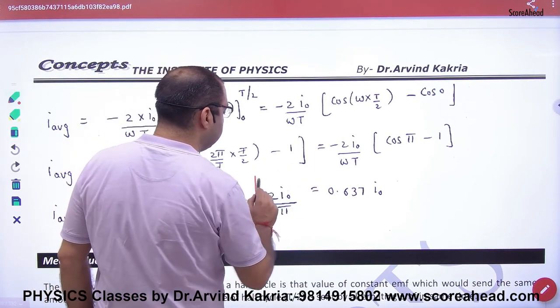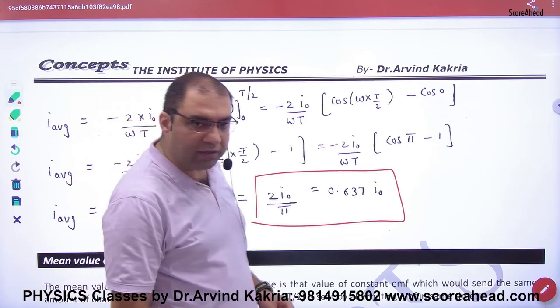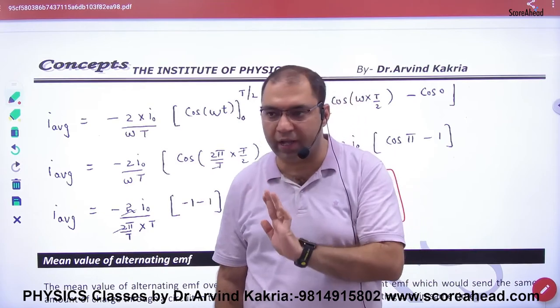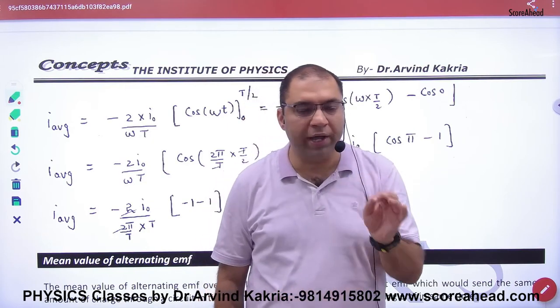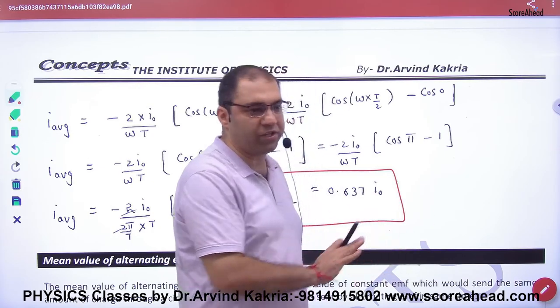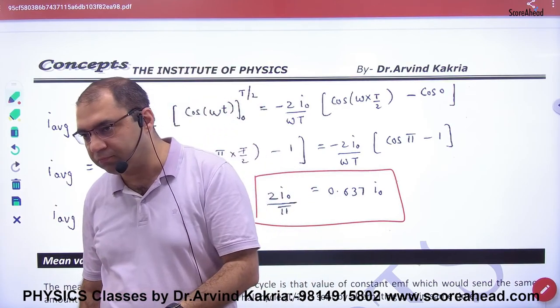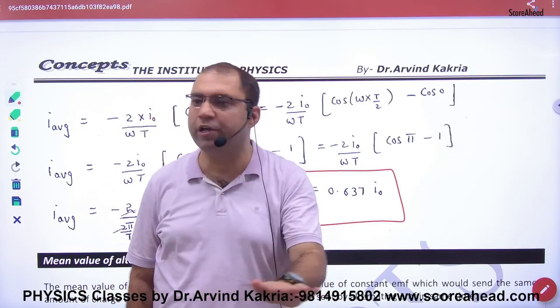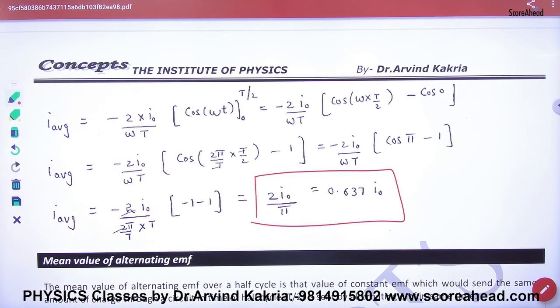So formula, box it. Average current formula is 0.637 times I not. I not means maximum current. If someone asks, how much current is in the wire? I will say maximum current is I not, which is 3 ampere. So we multiply 0.637 by 3 to get mean value. So we have a formula to calculate the average or mean value. 0.637 multiplied by maximum value gives the average value.